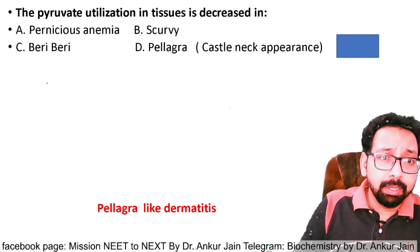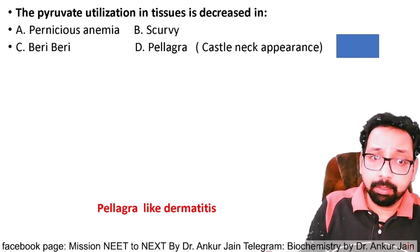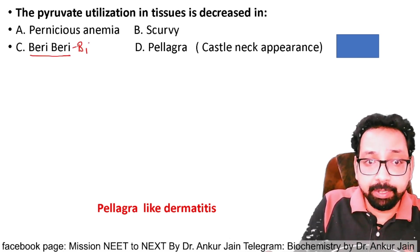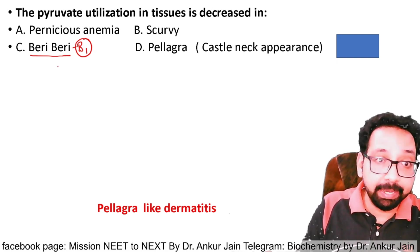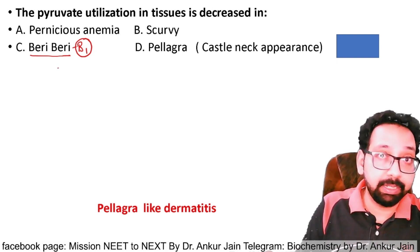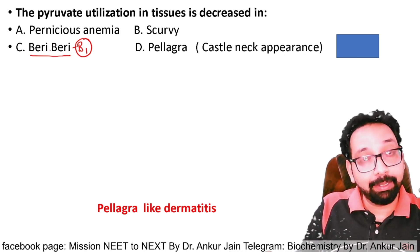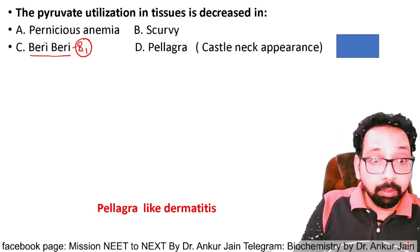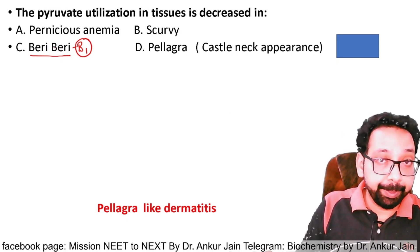A classic exam question: 'Pyruvate utilization in tissue is decreased in which condition?' The answer is beriberi. In beriberi there is vitamin B1 deficiency; B1 is the cofactor for oxidative decarboxylation, so pyruvate is not metabolized by that pathway and is converted to lactate, causing lactic acidosis.